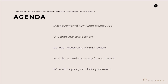Let's take a look at the agenda. We'll start with a quick overview of how Azure is structured to make sure we're on the same page with our terminology. Then we'll look at how to structure your single tenant — not multiple tenants or hybrid solutions today, just a single tenant. After that, we'll get our access control under control, establish a naming strategy for our resources, and finally look at what Azure policies can do for our tenant.